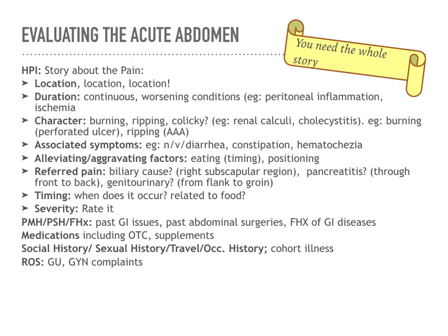When performing your evaluation of the acute abdomen, you want a very good and thorough history of present illness — covering location, duration, character, associated symptoms, aggravating and relieving factors, referred pain, timing, and severity. Look at the characteristics: is the pain ripping, colicky? Does it radiate to the back or shoulder? Are there associated symptoms like constipation, nausea, or vomiting? Is there any past medical or family history? What medications are they taking? Also include in your review of systems any GU or gynecological issues.